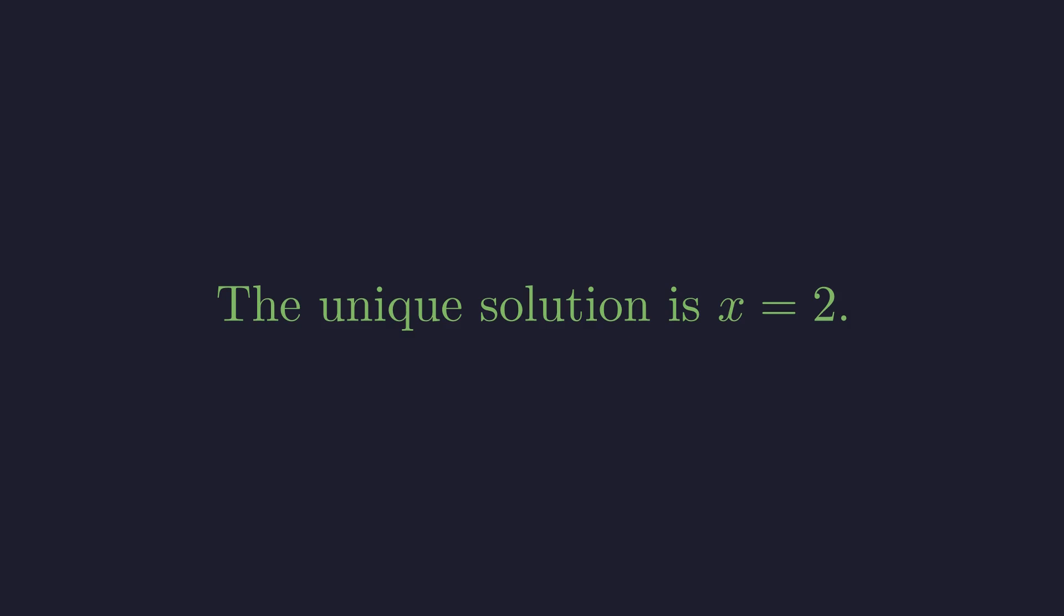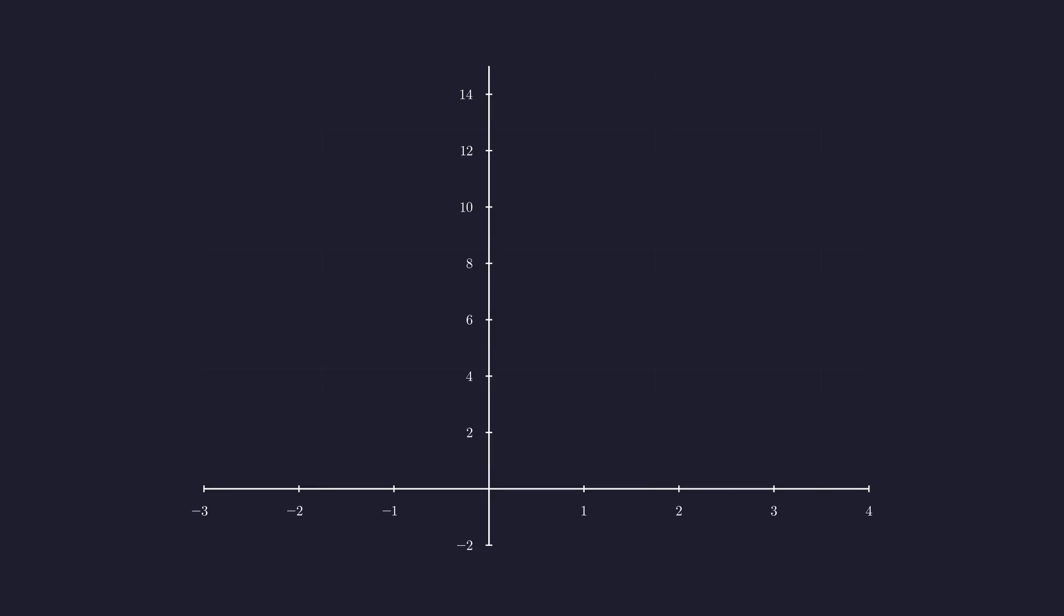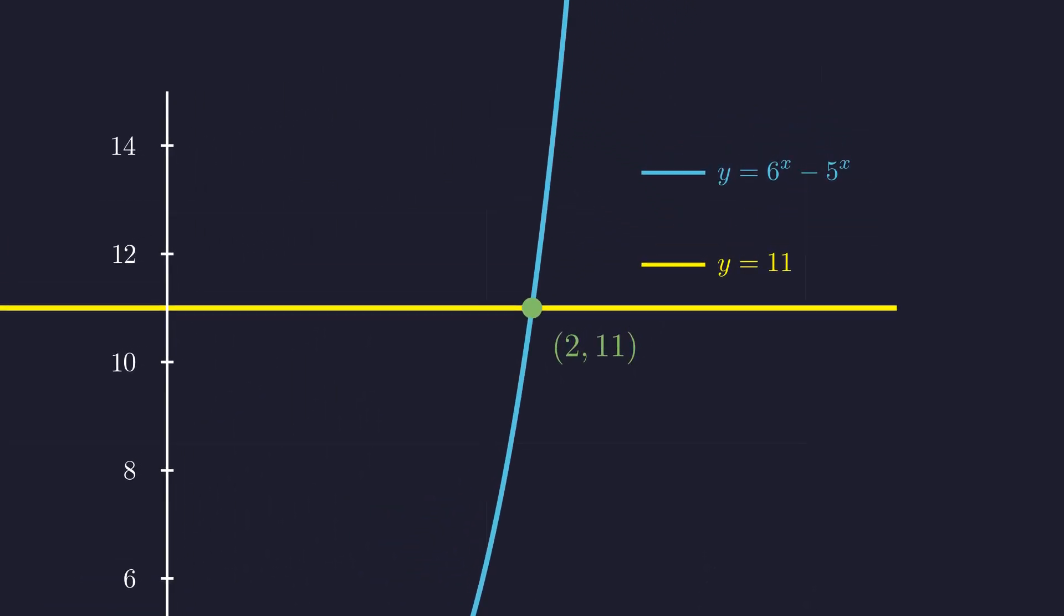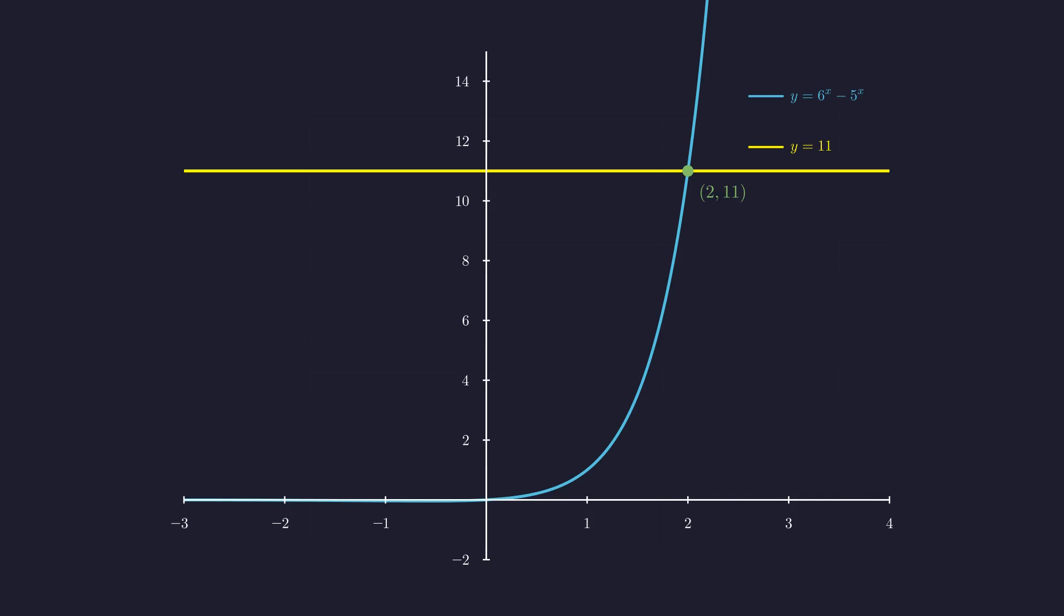And you know what, this whole analysis becomes beautifully clear when we visualize it. Here's our function in blue, y equals 6 to the x minus 5 to the x, and in yellow we have the horizontal line y equals 11. The solutions to our equation are exactly where these two curves intersect, and just as our analysis predicted, there's exactly one intersection point. If we zoom in, we can see that this intersection happens exactly at x equals 2, y equals 11. What I love about this problem is how the visual confirms our analytical work. We used calculus and careful case analysis to prove uniqueness, and the graph shows us exactly what we predicted: one clean, elegant solution.